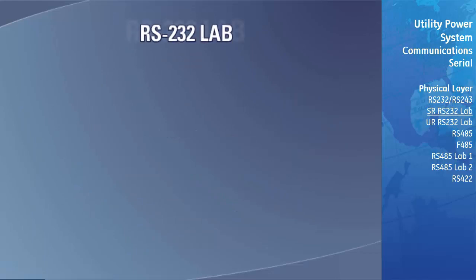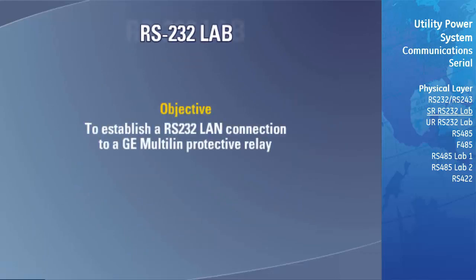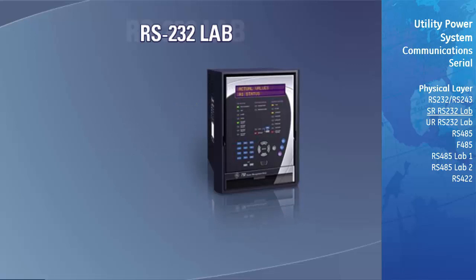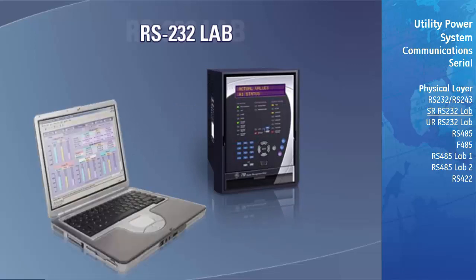The objective of this lab is to establish an RS-232 LAN connection to a GE Multilin protective relay. The equipment required includes one GE Multilin SR protective relay, a computer with an RS-232 serial port loaded with either the SR or UR configuration software, and a serial cable configured for either a 9-pin or 25-pin computer port.